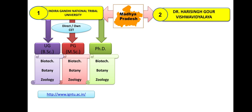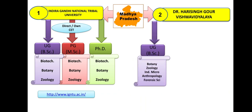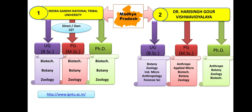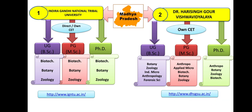Second MP university is Dr. Harisingh Gaur Vishwavidyalaya. BSc is available in Botany, Zoology, Industrial Microbiology, Anthropology, and Forensic Science. MSc in Anthropology, Applied Microbiology, Biotechnology, Botany, and Zoology. PhD in Anthropology, Botany, Zoology, and Biotechnology. Admission will be through their own entrance examination. Website provided.